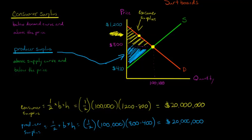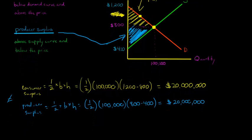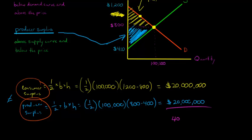We'll talk about instances where producer surplus and consumer surplus are not the same — things like a quota on imports, a tariff, or other policies that may transfer some consumer surplus to producers. There will also be cases where we lose some value and nobody gets it, which we'll call a deadweight loss. Adding consumer surplus and producer surplus together gives us total surplus: $20 million + $20 million = $40 million.